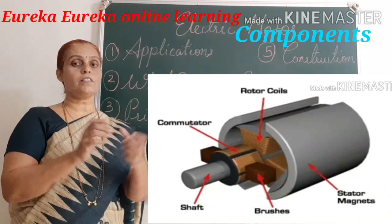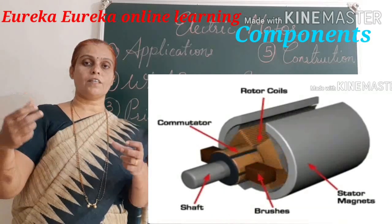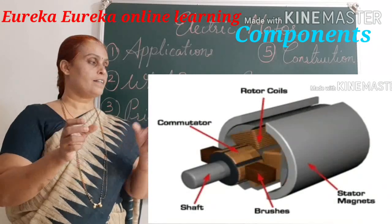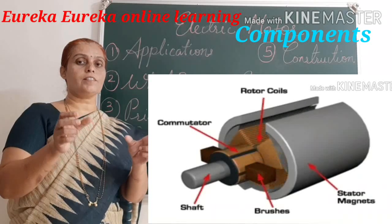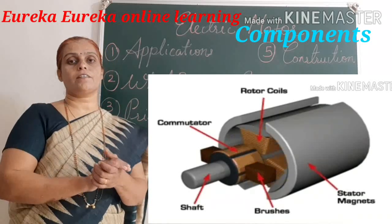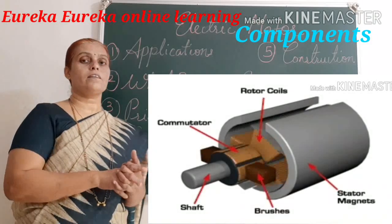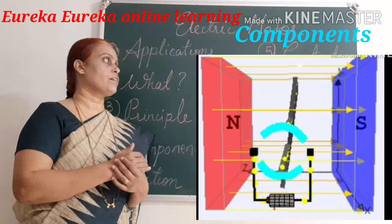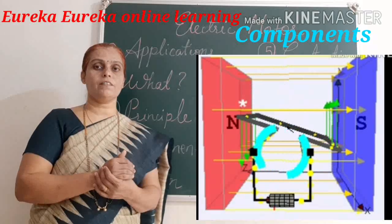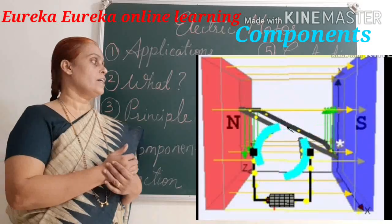Carbon brushes are also there — these carbon brushes provide contact between the stationary electric circuit and the rotating electric circuit, that is between the stator and the rotor. Let us see how this actually works in a small video clip to understand the working of the electric motor.